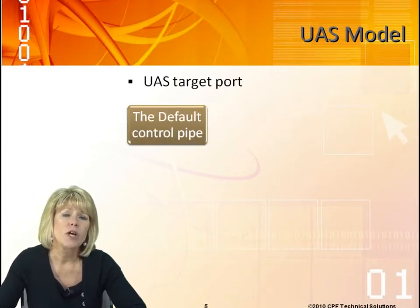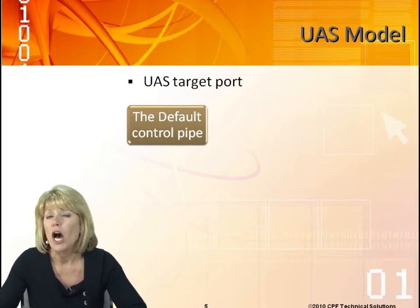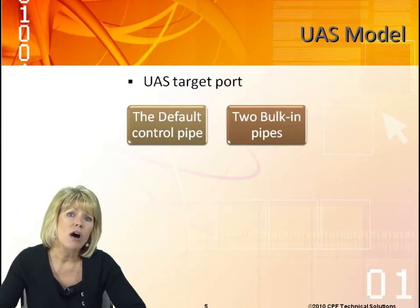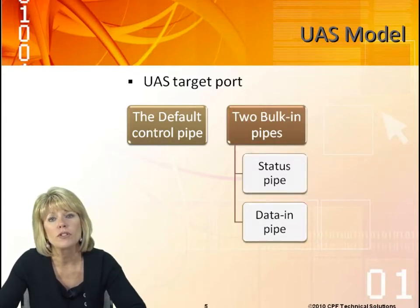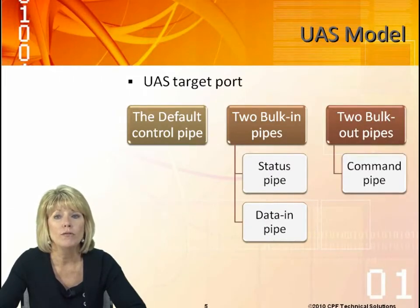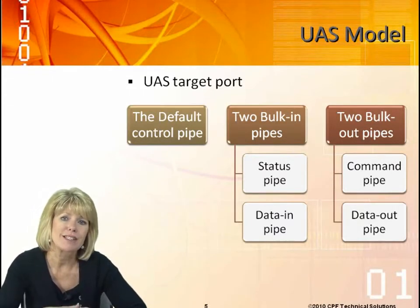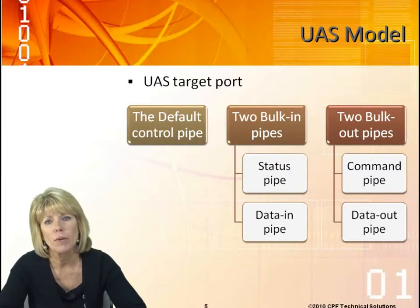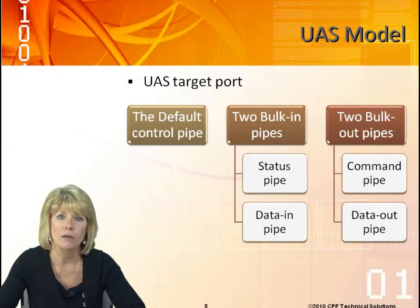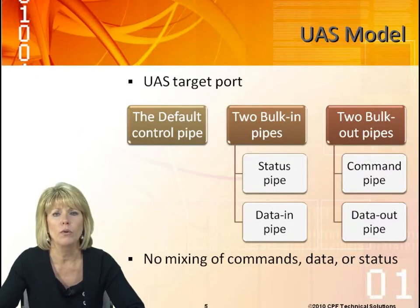If we talk about UAS, we have definitions as to what's required in the port. Obviously it has to have the default control pipe. It also has to have two bulk in pipes — one for status and one for data. It has to have two bulk out pipes — one for commands and one for data out. So it's separating the status pipe, the command pipe, and the data pipes. These are requirements to be UAS compatible. There is no mixing of commands, data, or status — they go to different endpoints.